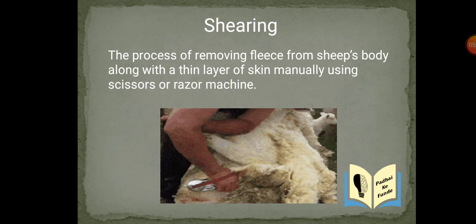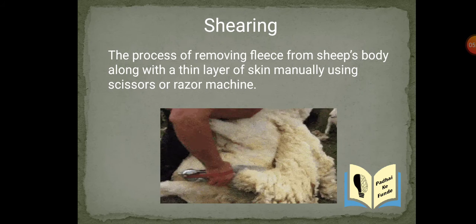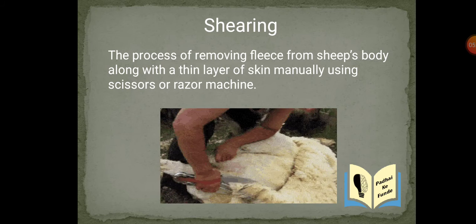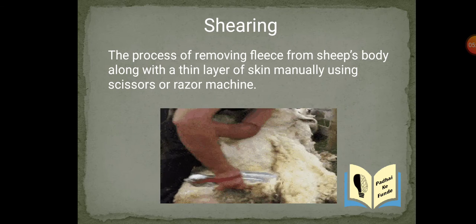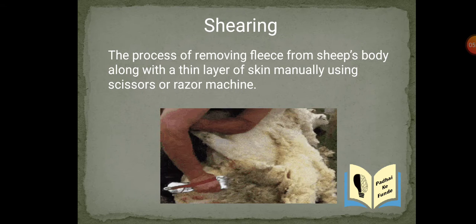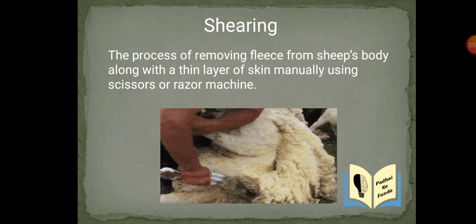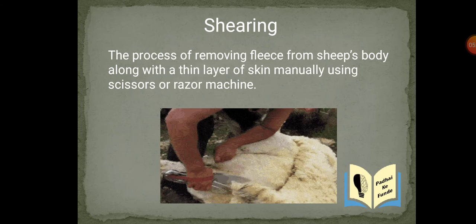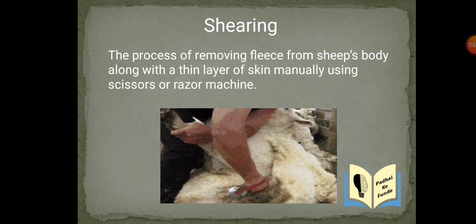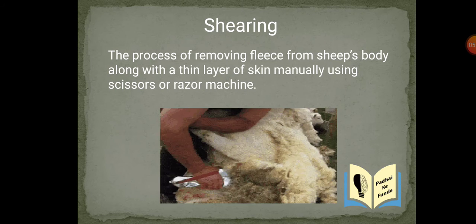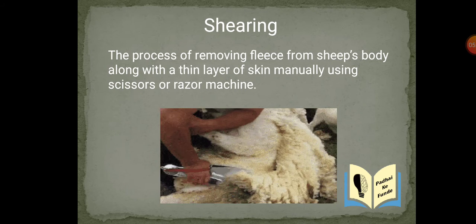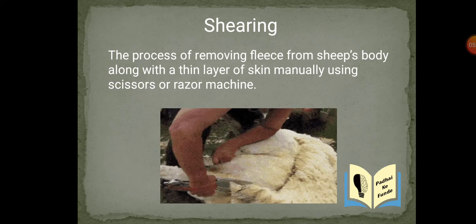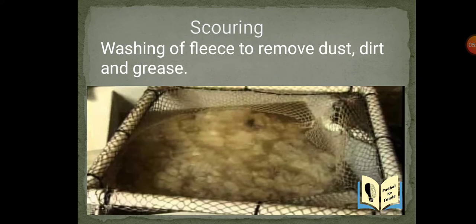When the fleece is taken out, a thin layer of skin is also removed. The process does not hurt the animal because the topmost layer of their skin is dead skin, so they do not get hurt. Shearing is done once a year, especially in the summer season, because the fleece provides protection to the animal in winter — keeping them warm. So in summer it is removed when it is not needed, and by winter their hair grows back again.